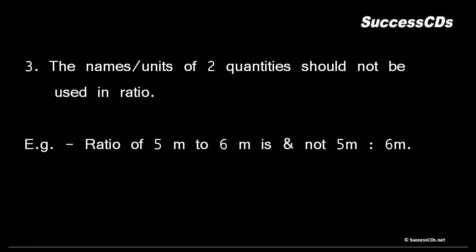Third point says the names or units of two quantities should not be used in ratio. Ratio of 5 meter to 6 meter cannot be written like 5 meter:6 meter. Please remember everyone, ratios are expressionless, unitless quantities. We are basically comparing two things, so when you compare two things you do not ever write units.